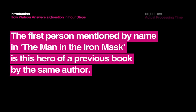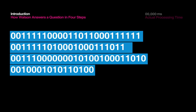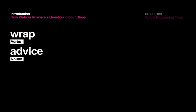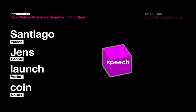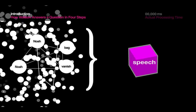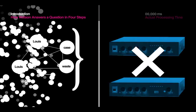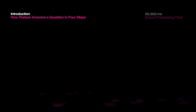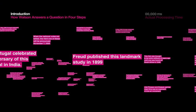Much less a computer. Remember, a computer understands code — ones and zeros — not nouns and verbs or people and places, let alone the relationships between them. Watson can't see or hear, so audio and visual questions are off limits, but everything else is fair game.